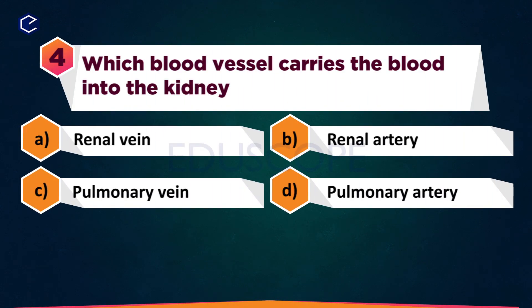Which blood vessel carries blood into the kidney? A: Renal vein, B: Renal artery, C: Pulmonary vein, D: Pulmonary artery.